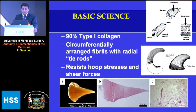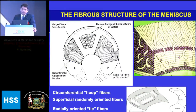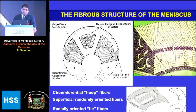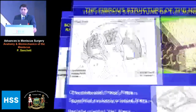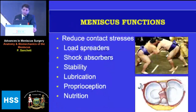The meniscus is 90 percent type one collagen. The important feature is the circumferentially arranged fibrils with radial tie fibers, which are critical for hoop stresses and shear forces especially during flexion and weight bearing. These circumferential and crisscross radial fibers give the meniscus strength and agility, allowing it to bear forces up to 300 megapascals without tearing. When forces exceed 300 megapascals, the meniscus begins to tear — and the amount of force and the mechanism are what matter.